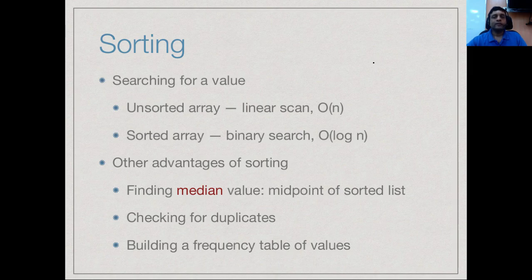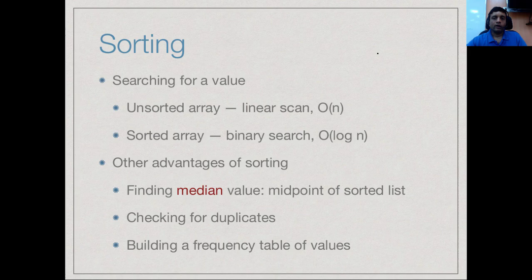There are other advantages to having elements sorted. For instance, if you want to find the median — the value for which half the elements are bigger and half are smaller — the median in a sorted array is clearly the midpoint. If you want to build a frequency table of values, when you sort them they all come together, so all equal values are in a contiguous block, making it easy to count copies. And if you want to remove all duplicates, you can scan the sorted array and for each block of values keep just one copy.